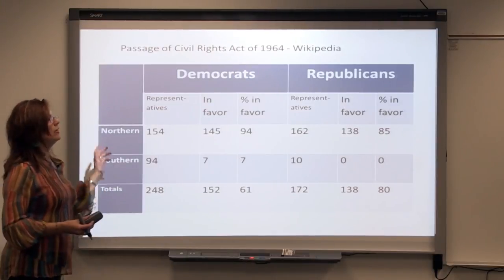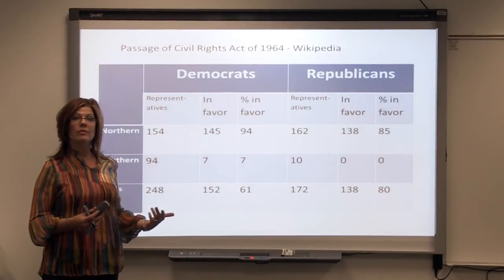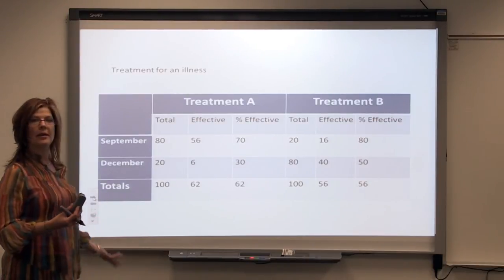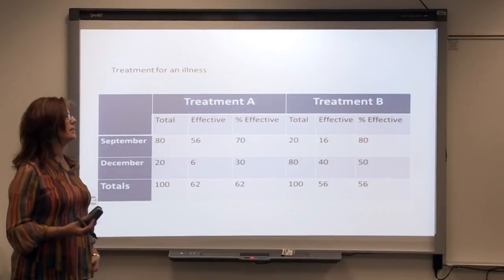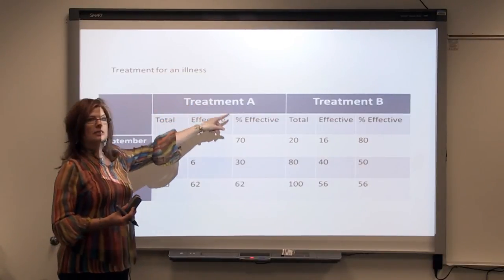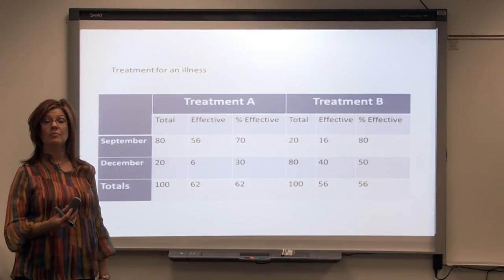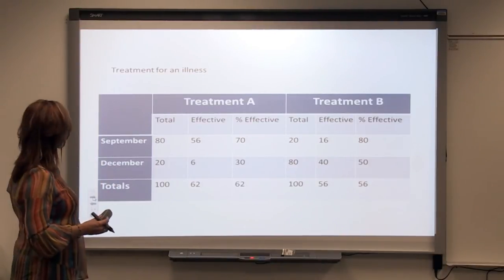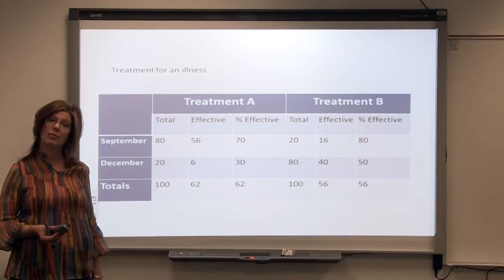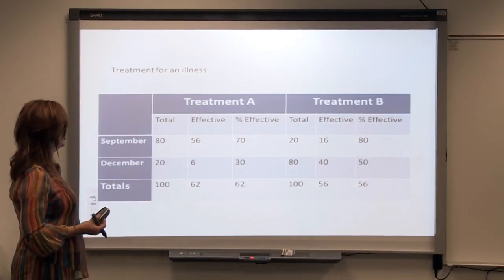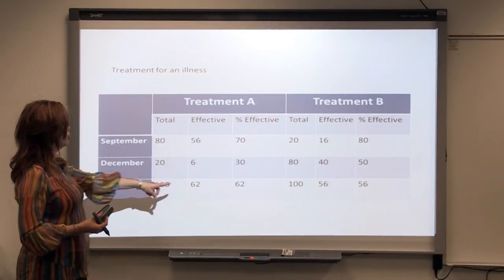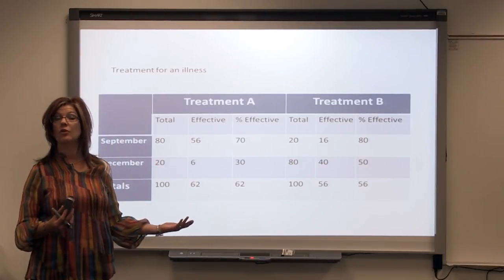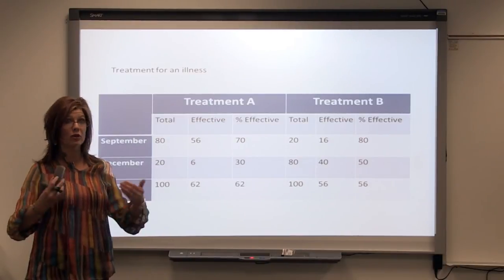Now let's make up an example with numbers that are easier to work with. This is an example about treatment for an illness. Let's say we have Drug Company A and Drug Company B, both promoting that their drug will effectively treat a certain illness. They collect data in September and also in December — two different time points. Drug Company A is going to say, look, overall 62% of our patients were effectively treated using our treatment, so you should choose our treatment.